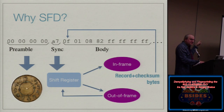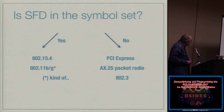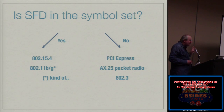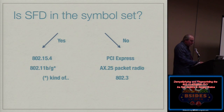Something strange: the start of frame delimiter and the preamble are encoded exactly the same way as the body of the frame. The SFD is actually in the symbol set. This is not the case for Ethernet, not the case for PCI Express, not the case for packet radio. It is the case for 802.15.4. And it is actually the case, kind of, for 802.11b/g — though the problem with b/g is that they switch the modulation in the middle of the frame as part of the transition from B to G.